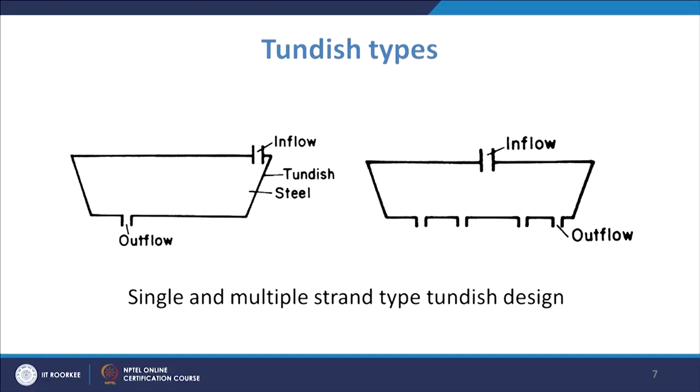Coming to the different tundish types, the earlier and very simple tundish shape is known as the boat-shaped tundish. In this case you may have some design changes — like walls that are not inclined but straight — and the inflow may be at one end or towards the middle. Accordingly you may have changes in the parameters of the tundish design.